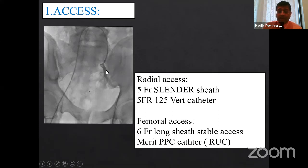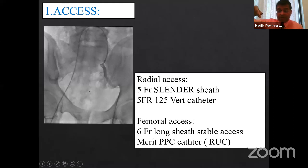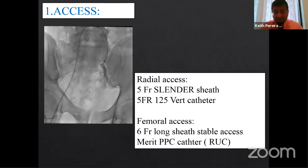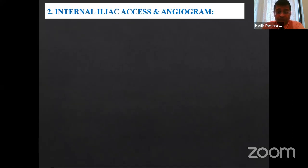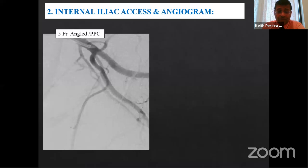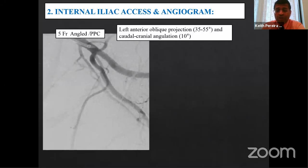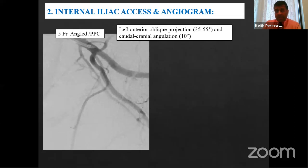I've been using the Merit PPC (Pisco Prostatic Catheter), which is similar to the RUC catheter used for fibroids. It has a nice U-shaped curve — unlike the hockey-stick curve of guiding catheters — which works very well. We get into the internal iliac artery and perform a DSA angiogram using a 5-French angle catheter or PPC, typically in an LAO cranial oblique projection. This separation of the gluteals and pudendals from the visceral arteries is the whole principle of the ipsilateral approach.